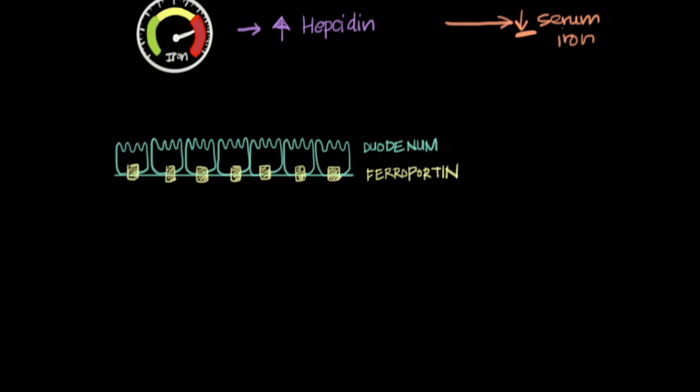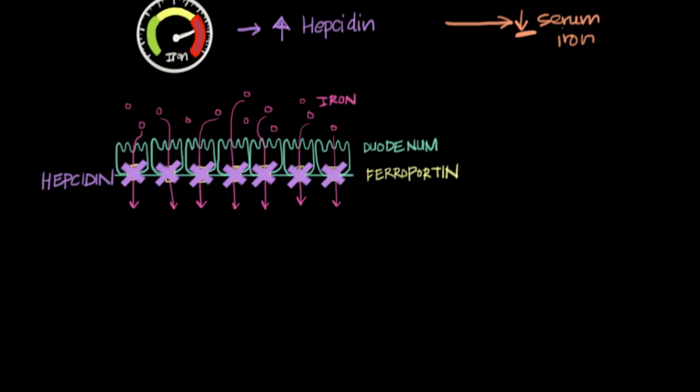Ferroportin allows iron to cross these cells in the duodenum and be absorbed into the bloodstream. Hepcidin comes in and blocks the ferroportin channels, inhibiting the absorption of iron from the gut. That's the first way hepcidin decreases serum iron levels.